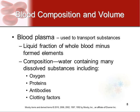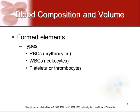Going back to the composition of blood: plasma is the liquid part, used to transport the substances in the blood. It's mainly made of water — 91% water — with some dissolved substances like oxygen, proteins, antibodies, and clotting factors. Within the plasma there are also formed elements: red blood cells, white blood cells, and platelets (thrombocytes).